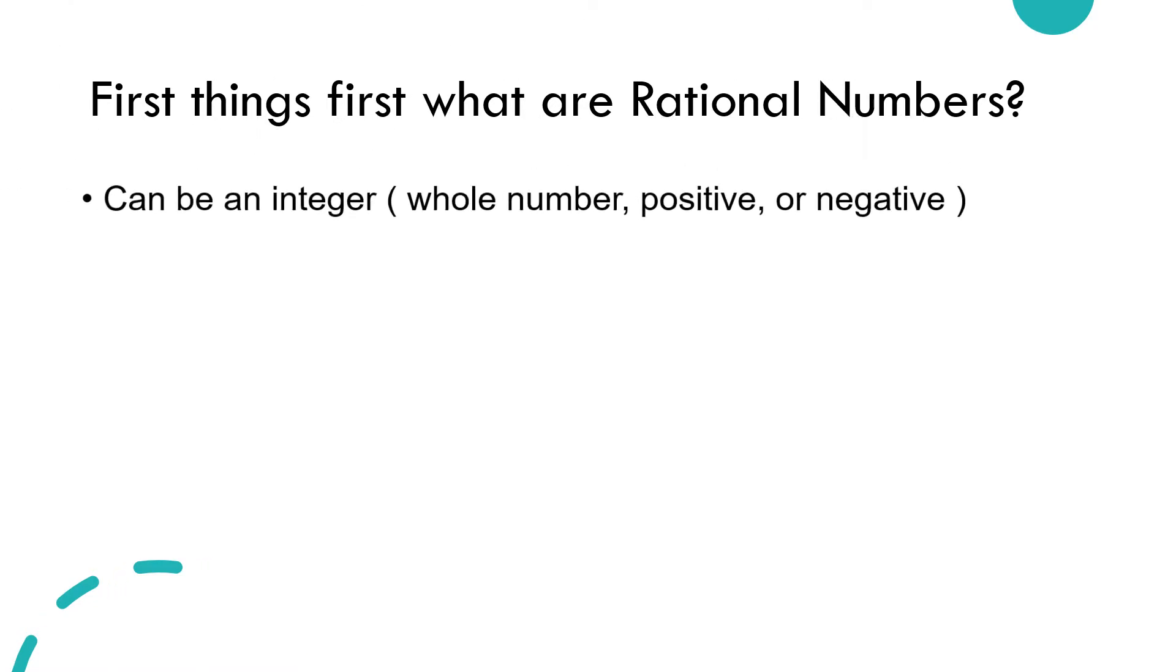Let's start by defining rational numbers. A rational number refers to a number that can be represented by the ratio of two integers. An integer is a whole number, positive or negative.